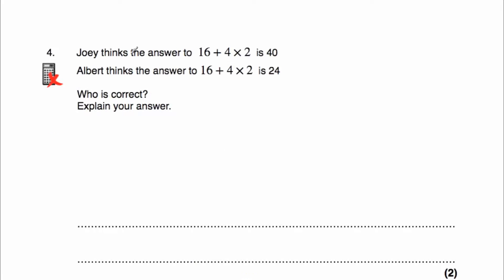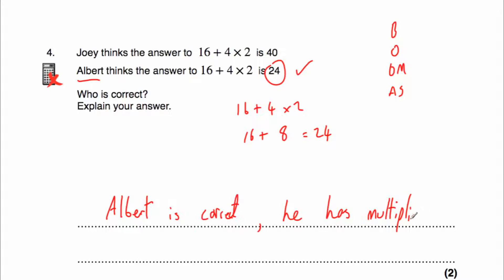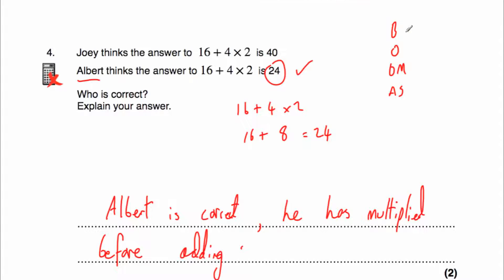Question 4: Joey thinks the answer to 16 plus 4 multiplied by 2 is 40, and Albert thinks it's 24. Let's work it out. We do our multiplication first: 4 times 2 is 8. Then 16 plus 8 is 24. Albert was correct. Albert is correct because he multiplied before adding — he used the correct order of operations, BODMAS or BIDMAS.